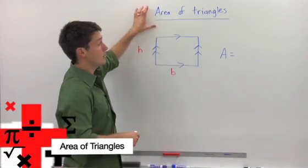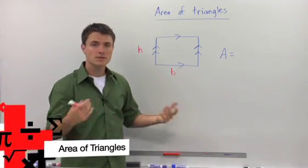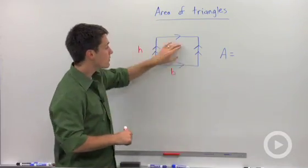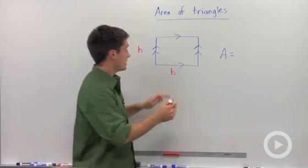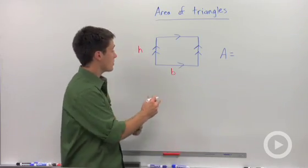In order to determine a formula to calculate the area of triangles, let's start with something that we know. We know the area of this parallelogram is equal to its base times its corresponding height.